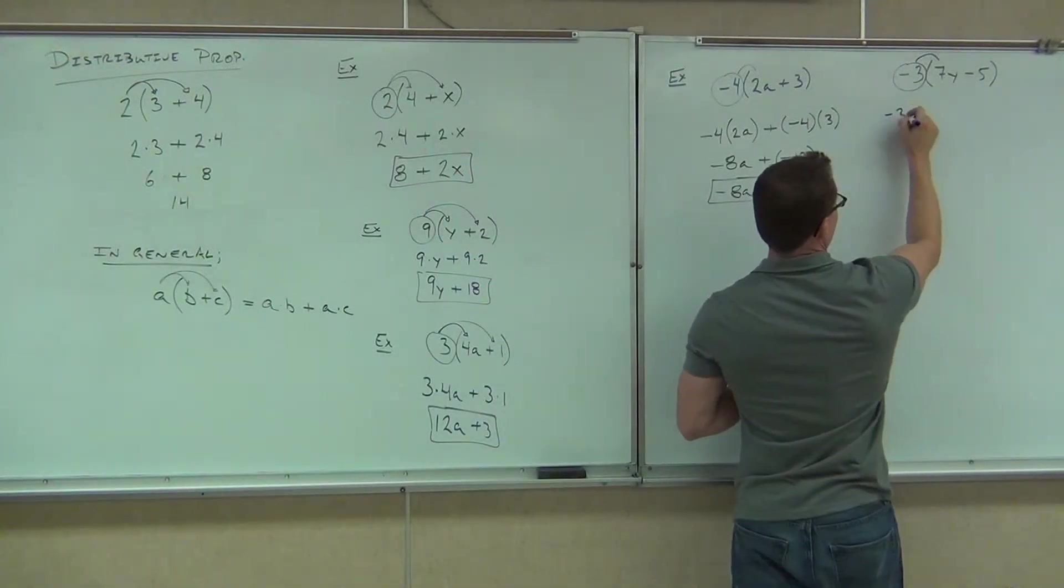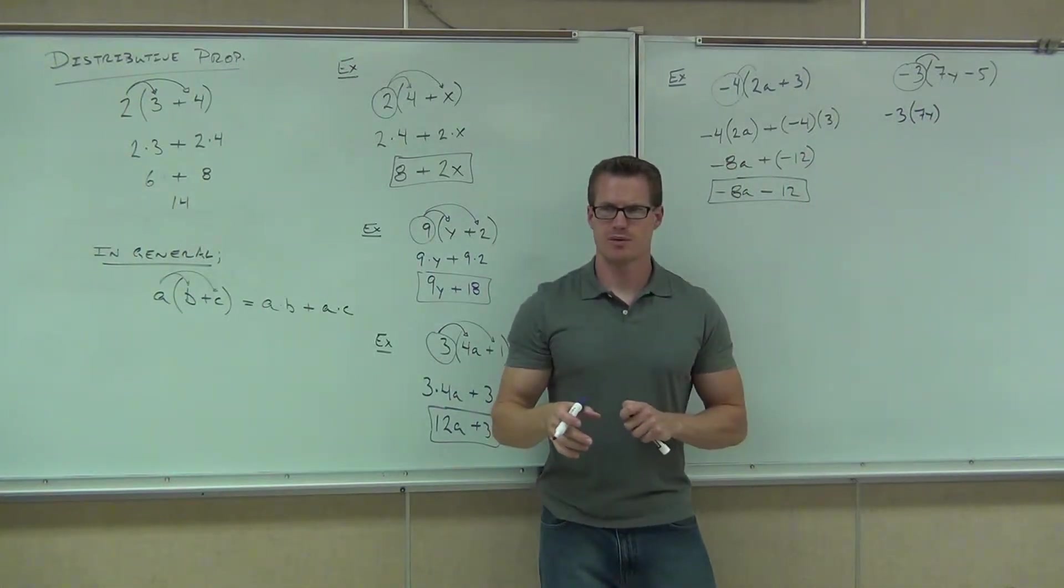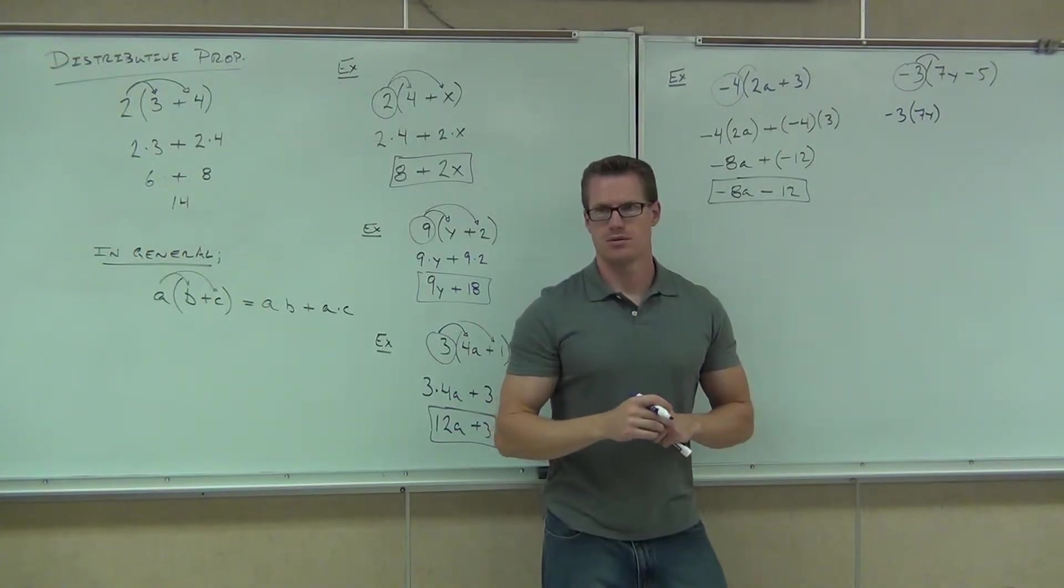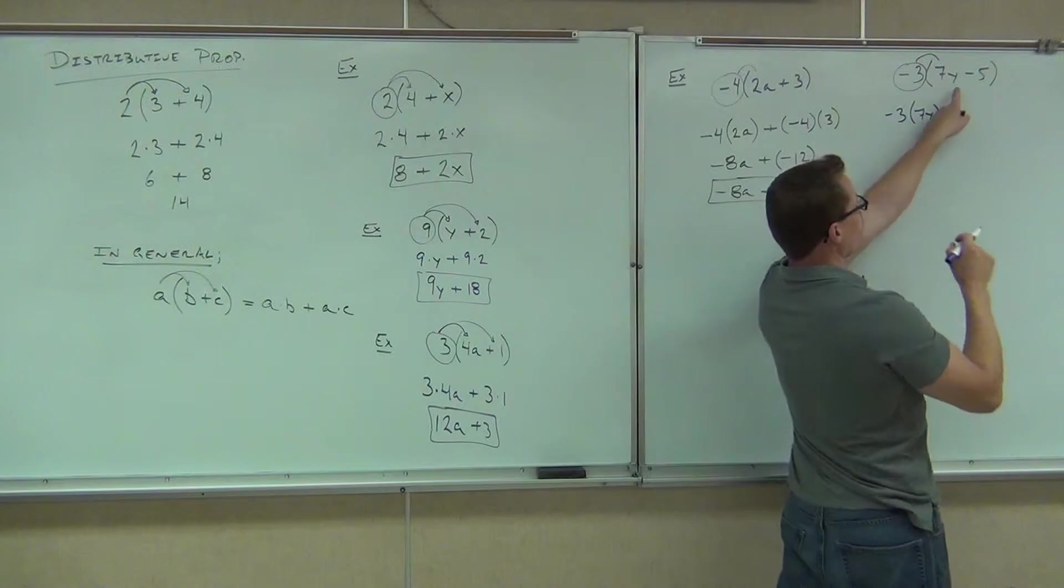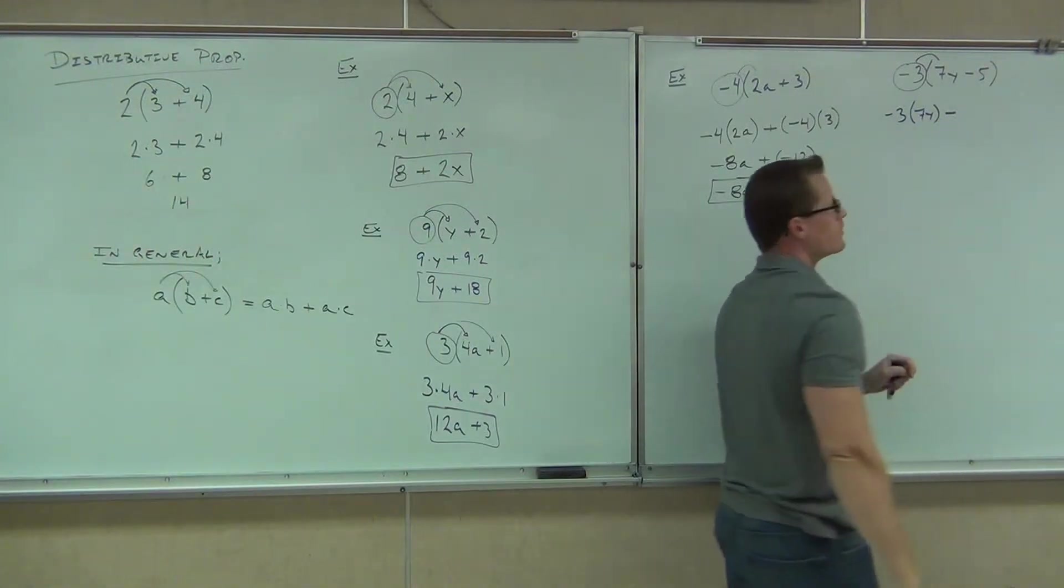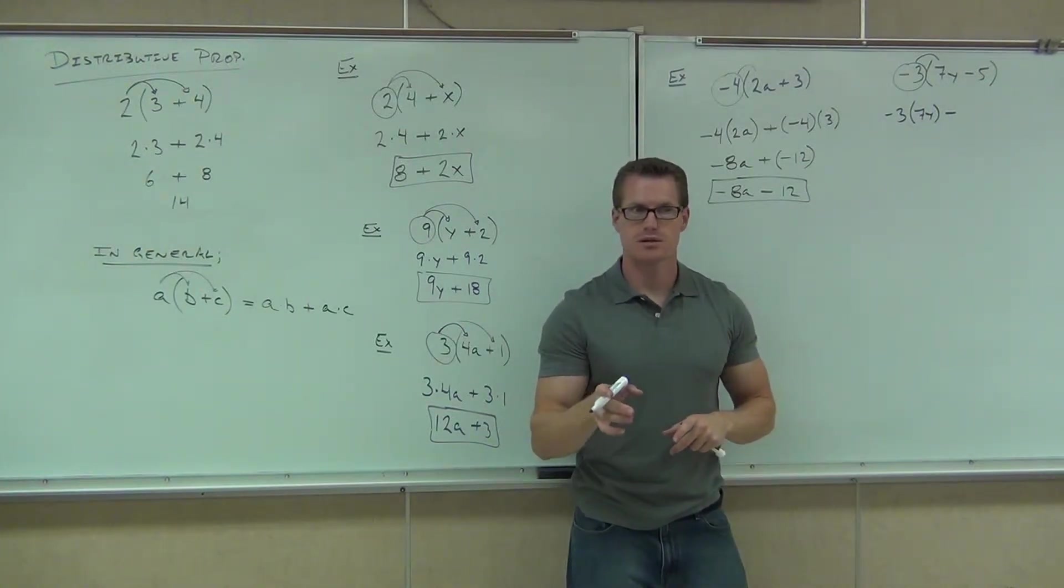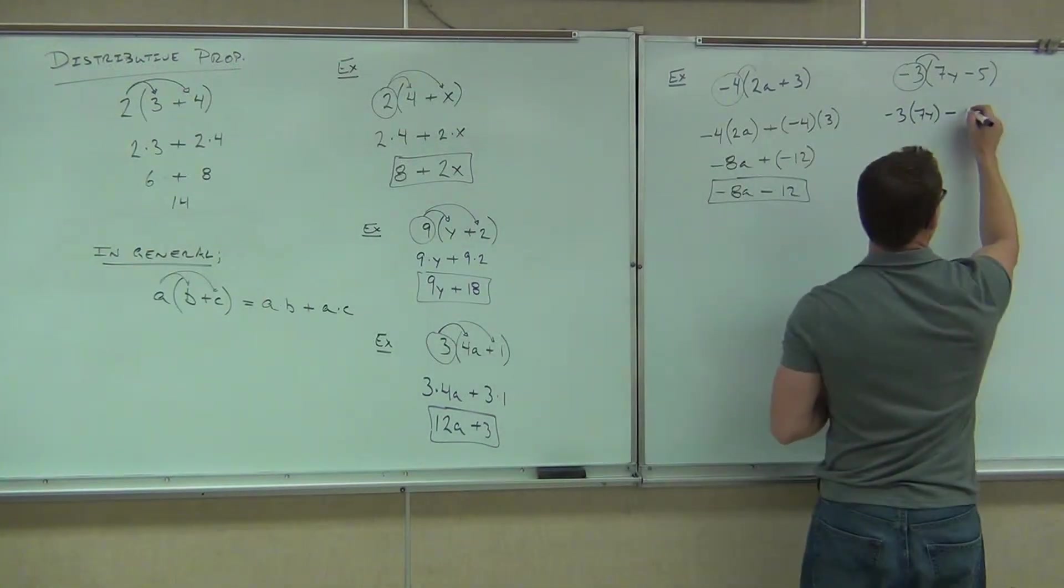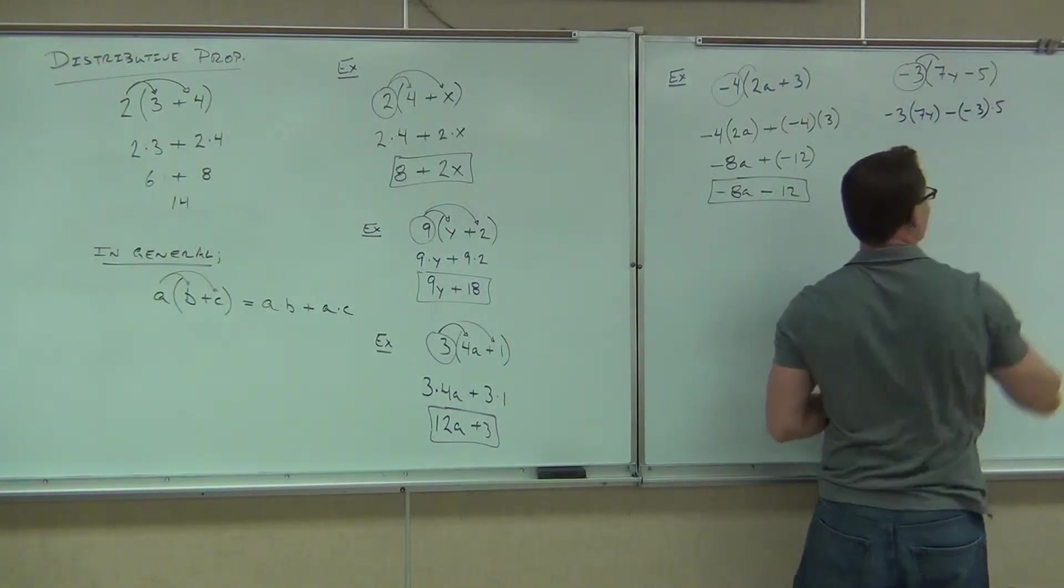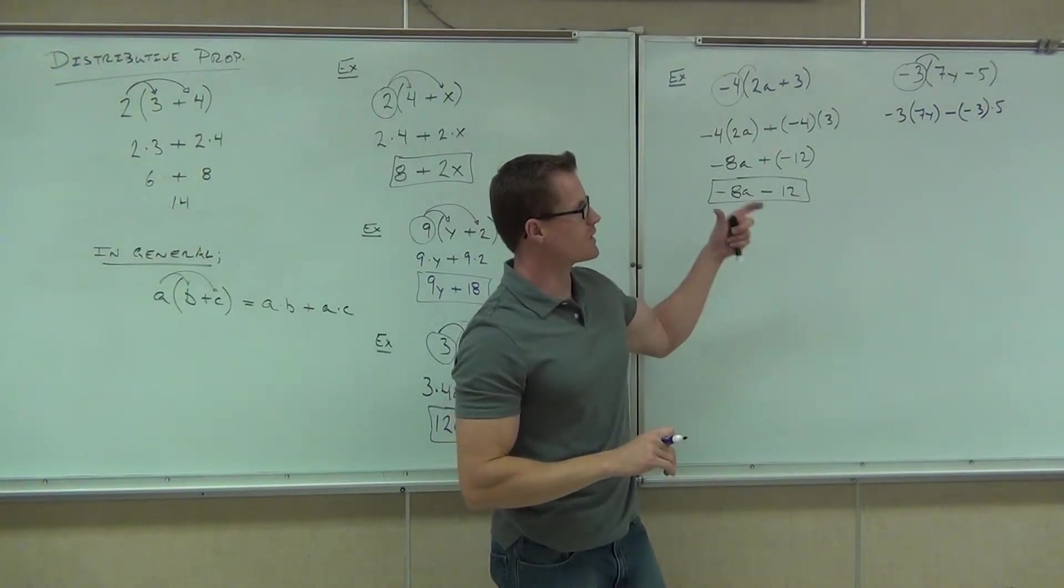We'll do negative 3 times 7y. Do you all see where the negative 3 times 7y is coming from? Yes. Okay. Then what are we going to have? Negative 3. Negative 3. What about that? That minus is still there, right? Yeah. Minus. Okay. We have a minus there, and then what do we have? Negative 3 times 5.